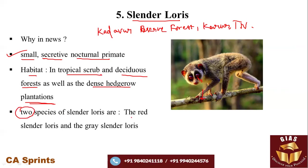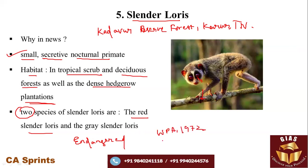There are two types: the red slender loris and the gray slender loris. A unique habit of this species is washing its body with urine, which is believed to help prevent insect stings. Its IUCN status is endangered, listed on the IUCN Red List. Under the Wildlife Protection Act 1972, it is declared as Schedule I, providing the highest degree of protection.